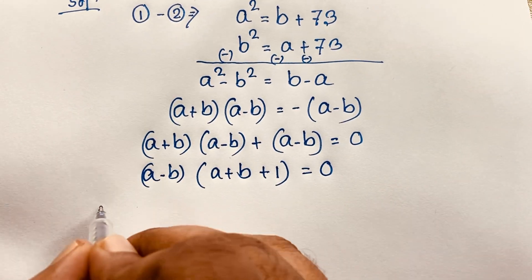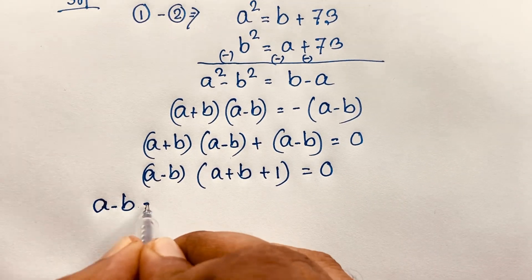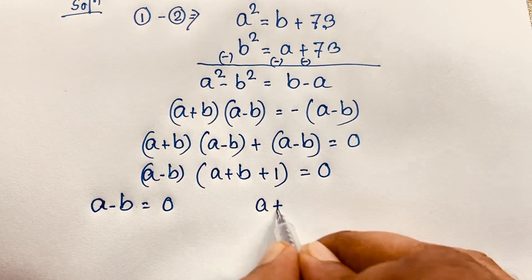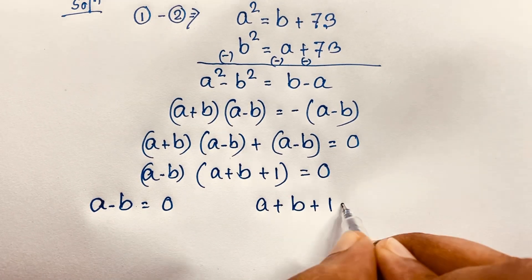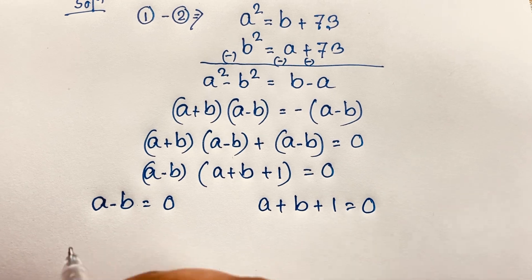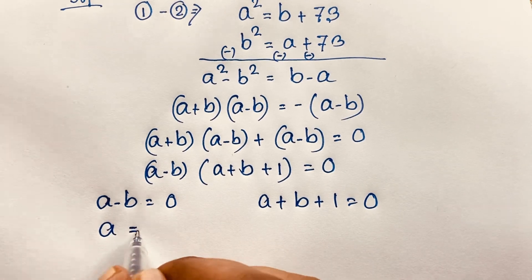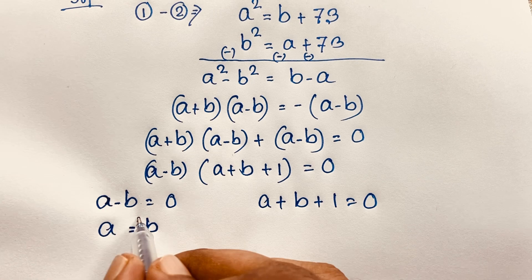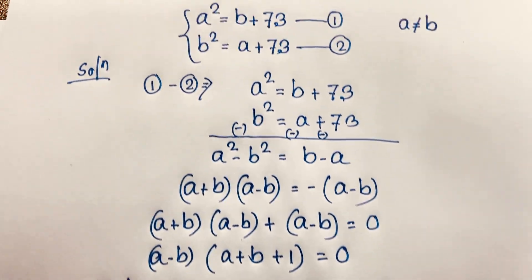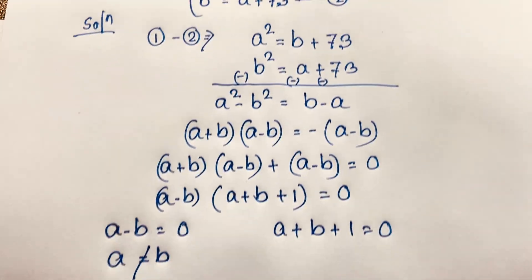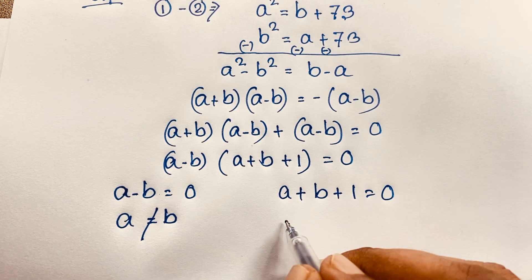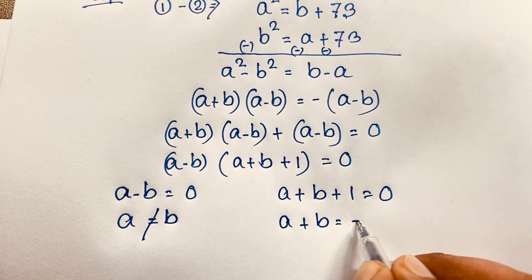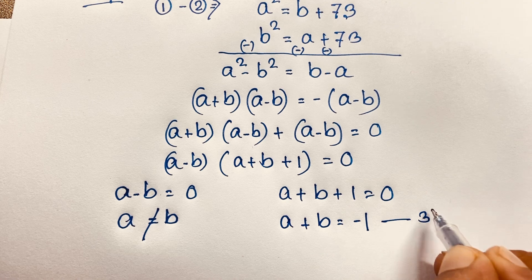From this we get two cases: a minus b equals 0, meaning a equals b, but remember a is not equal to b, so we reject this. The other case gives a plus b plus 1 equals 0, so a plus b equals negative 1. This is our third equation.